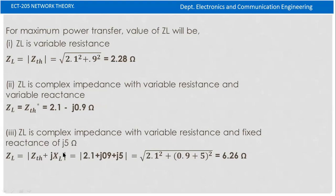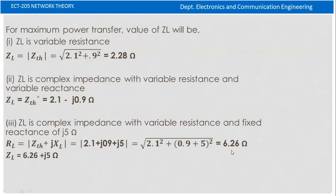The variable resistance has a fixed reactance. XL value is j5. The magnitude of ZL equals the magnitude of Zth plus jXL. Zth value is 2.1 + j0.9, plus j5. So RL equals 6.26 and ZL equals 6.26 plus j5 ohm.